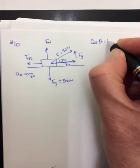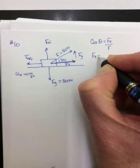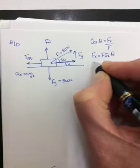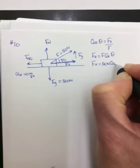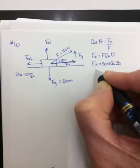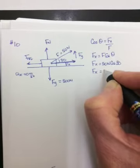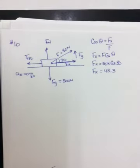So cos theta will equal Fx over F, so Fx is just equal to F cos theta. So Fx is equal to 50 newtons times the cos of 30. Cos of 30 is 0.866, so this should be 43.3. There's probably another digit, but I don't know it in my head.